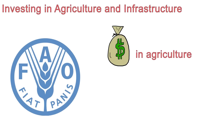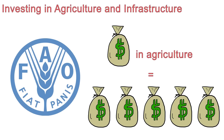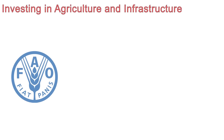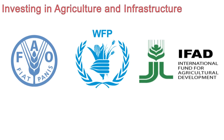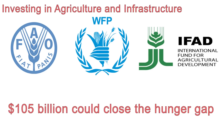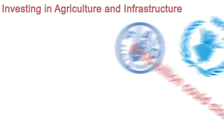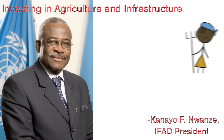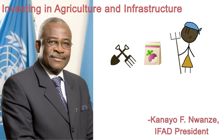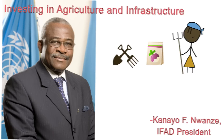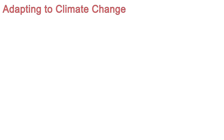Of course, the only long-term solution will be to find a way to resolve the many conflicts causing the disruption. Investing in agriculture and infrastructure is a hugely promising endeavor — research by the FAO has shown that investing in agriculture is up to five times more effective at reducing hunger and poverty than investing in any other sector. In mid-2015, the FAO, the World Food Programme, and the International Fund for Agricultural Development presented a report suggesting that a $105 billion investment in irrigation and food processing infrastructure could very possibly close the hunger gap.